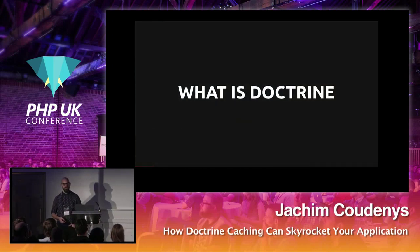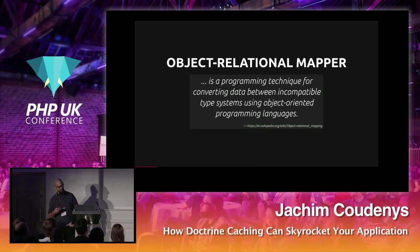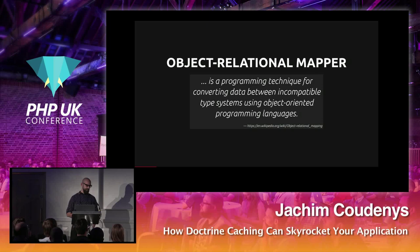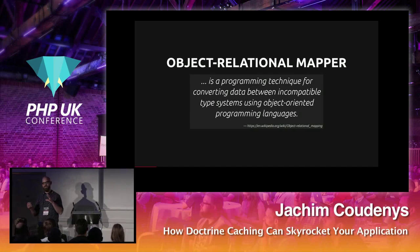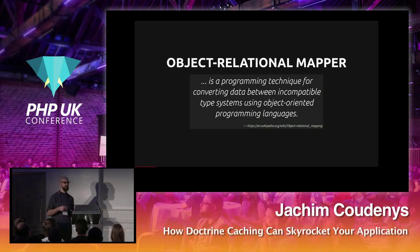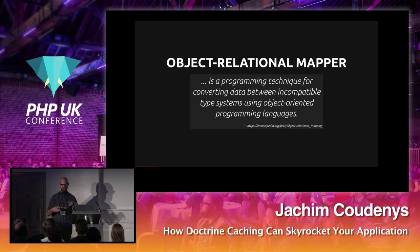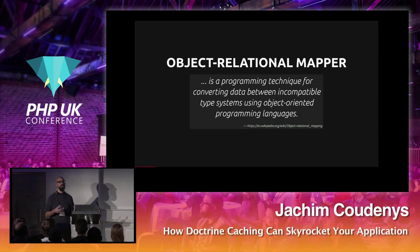What is Doctrine? Doctrine is an object-relational mapper — a programming technique for converting data between incompatible type systems using object-oriented programming languages. What an ORM basically does is map data from a database into objects that you can use in your application.